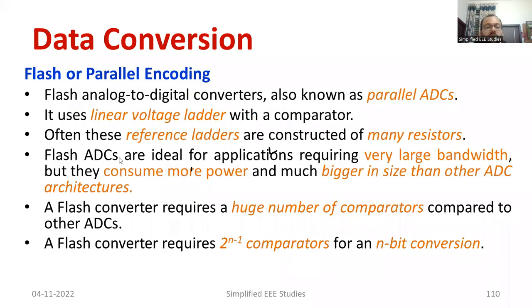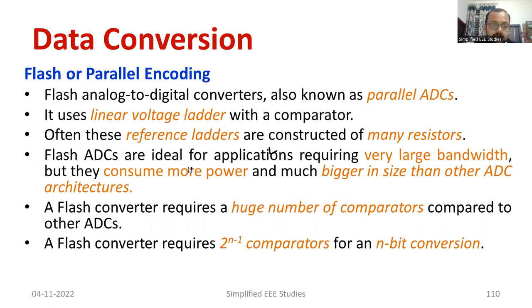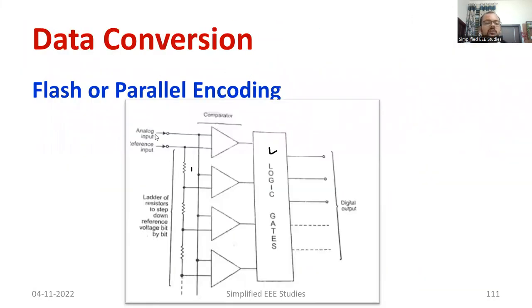Moving ahead, we have a reference ladder made up with a large number of resistors which are connected in series. That is also very clearly visible here. Flash ADCs are ideal for applications requiring very large bandwidth. Also, each case you are going to convert analog input. Your input will be compared with the reference input, it is amplified, then given to logic gate. Correspondingly we will be getting the digital output in the form of LSB and MSB.